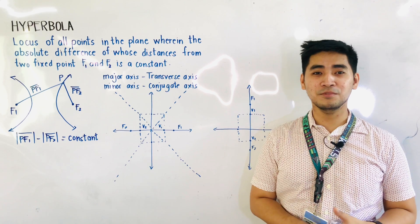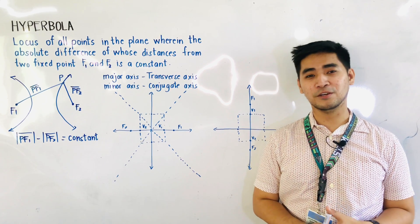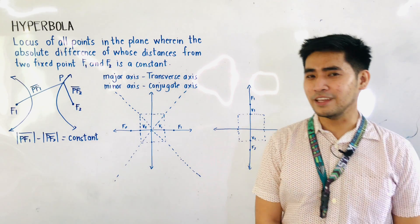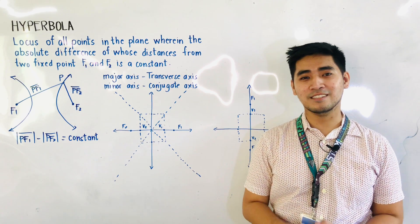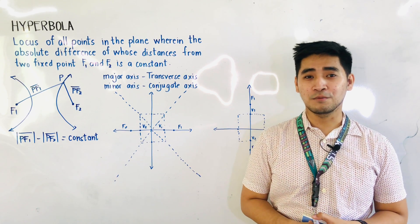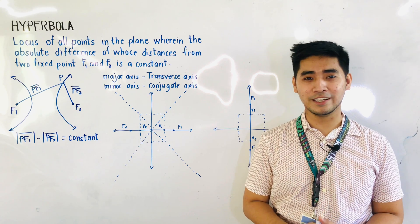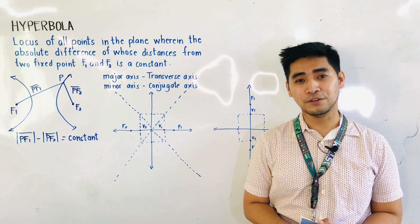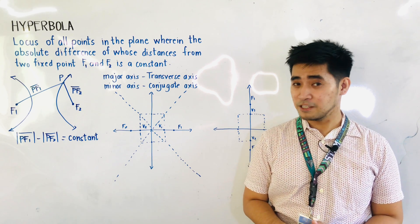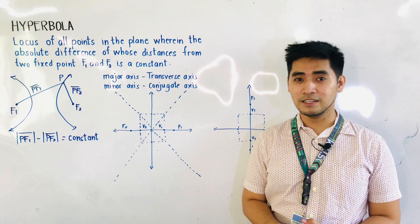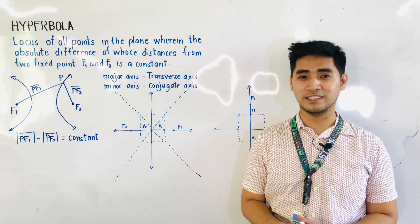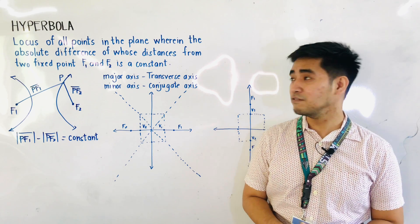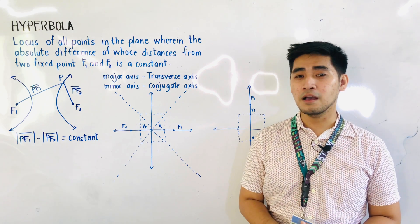Hi Judgers! Welcome to another segment of Juan Arliwag Memorial High School Senior High School Math TV. For today, we will be discussing the last type of conic section. We're done discussing the first type which is the circle, the second one which is the parabola, the third one which is an ellipse, and for today we'll now be dealing with the last type of conic section, which is the hyperbola.